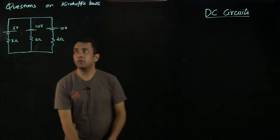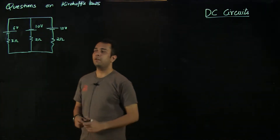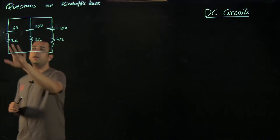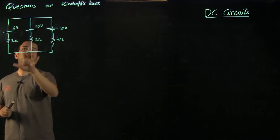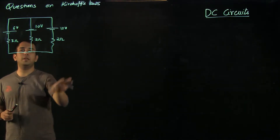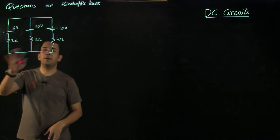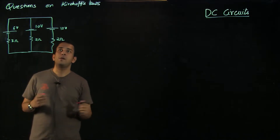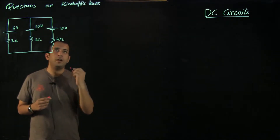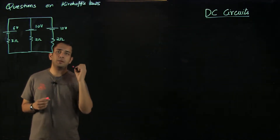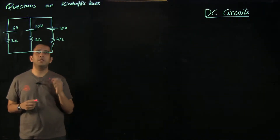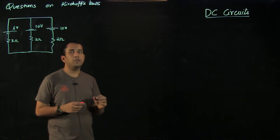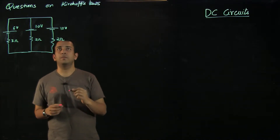This is the question which we have in hand. We can see that there are multiple cells and multiple resistances in it. So we will define some steps which we will be following again and again in different questions which we encounter.